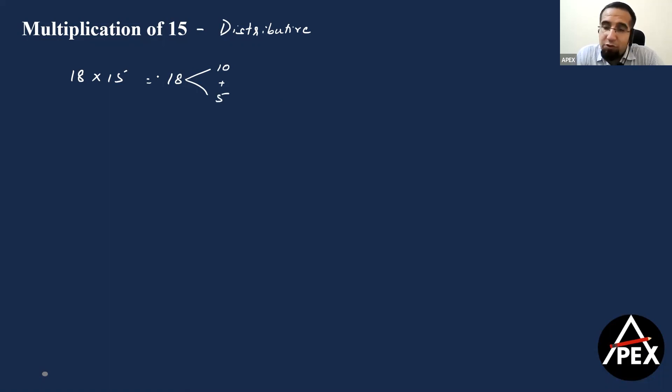Why did I say this makes your job easy? What is 18 into 10? 18 into 10 gives me 180. What is 18 into 5? 18 into 5 is half of 18 into 10. I already have 18 into 10 here. So if I half this, half of 180 is 90, and if I add both of them, 270 becomes your answer, which is 18 into 15.